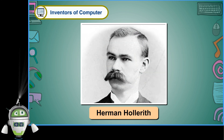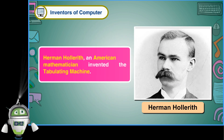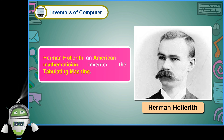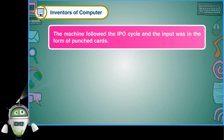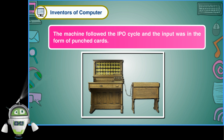Herman Hollerith was an American mathematician who invented the tabulating machine. The machine followed the IPO cycle and the input was in the form of punched cards.